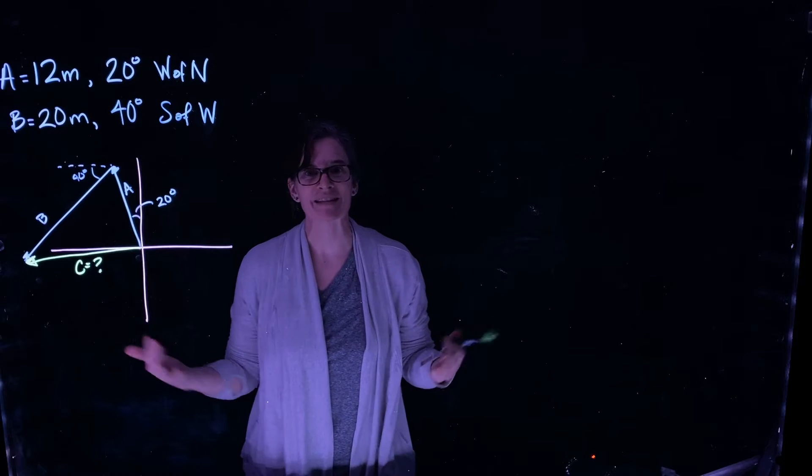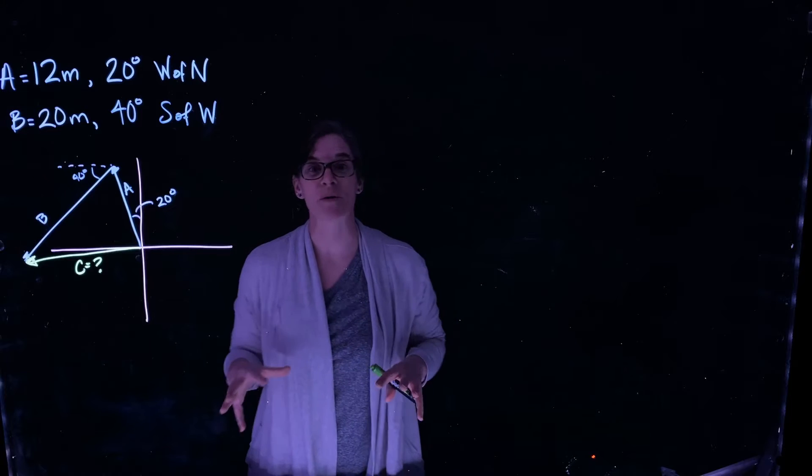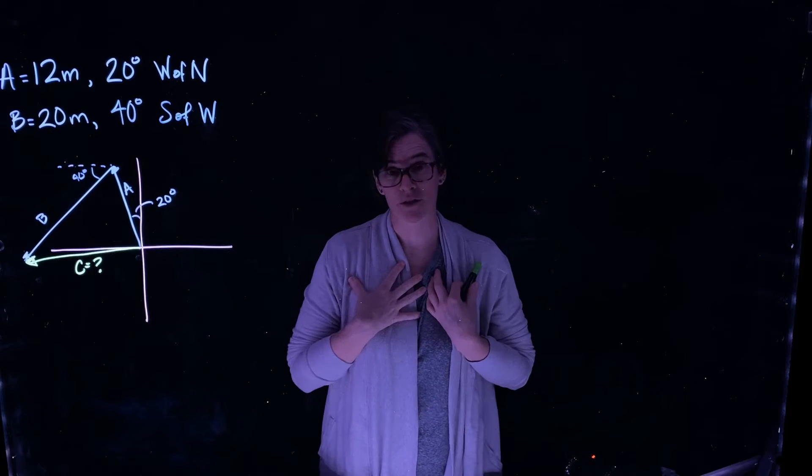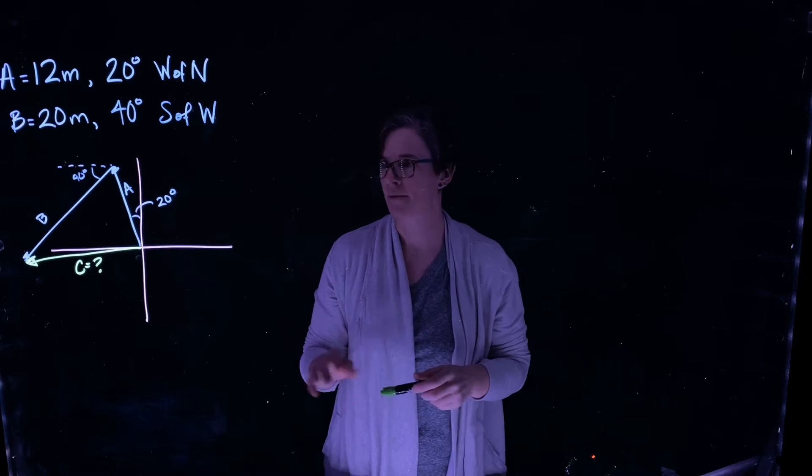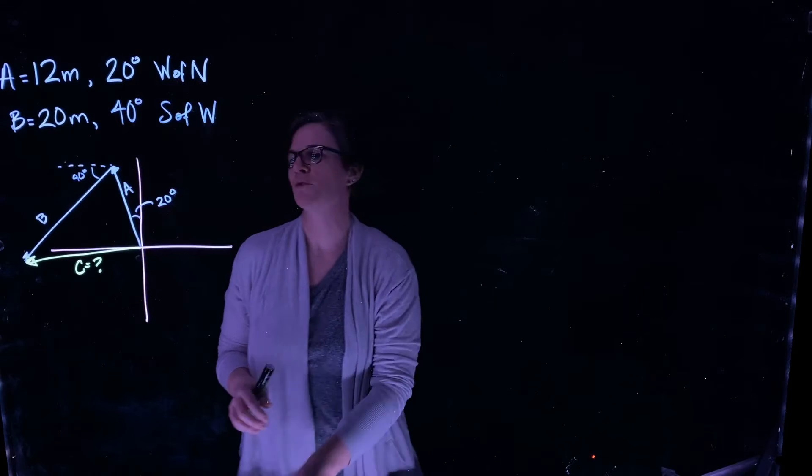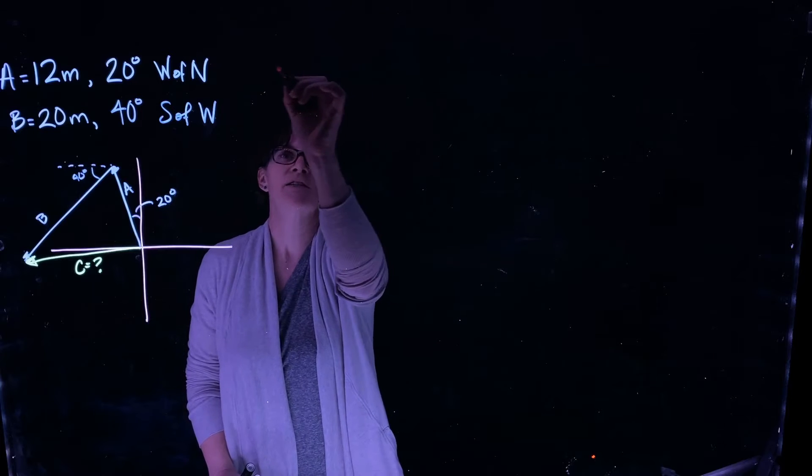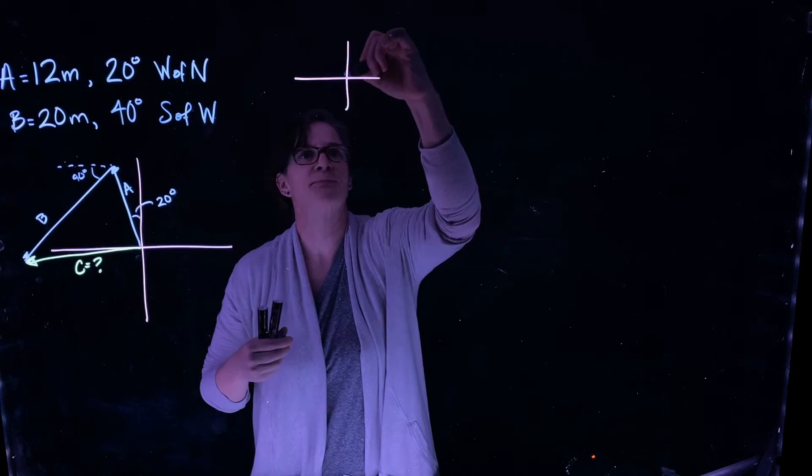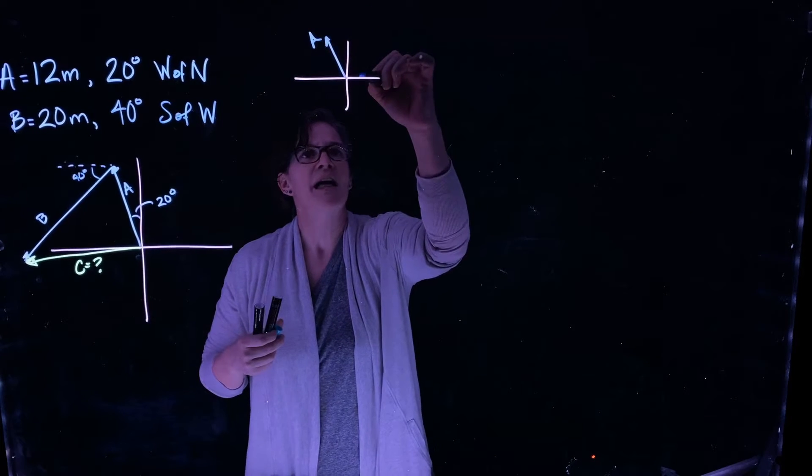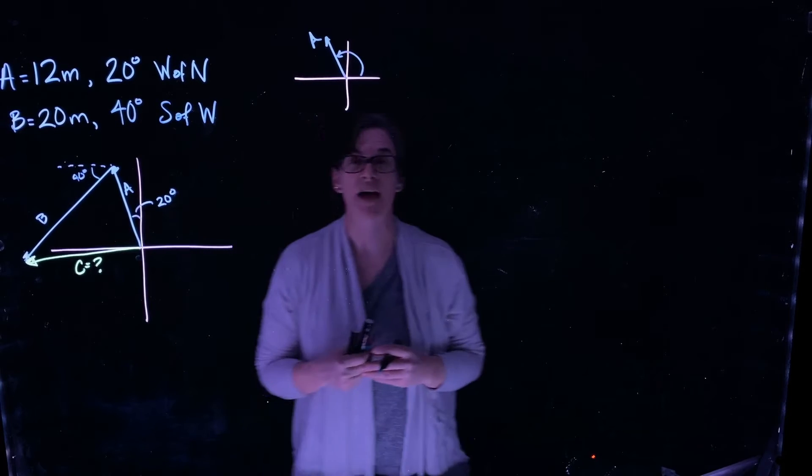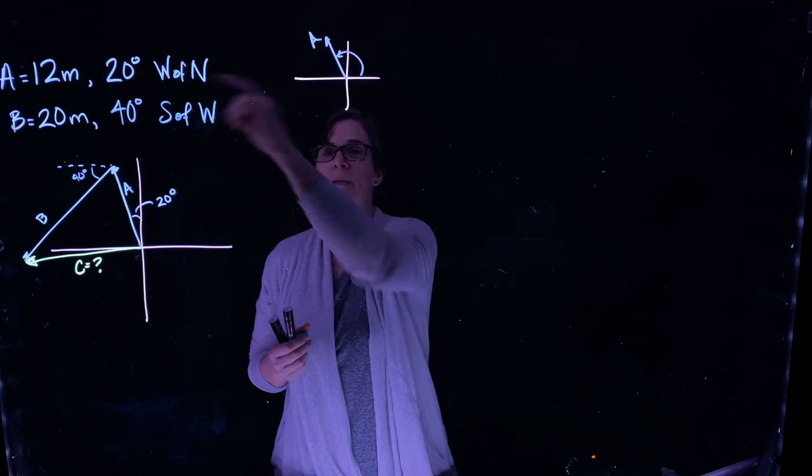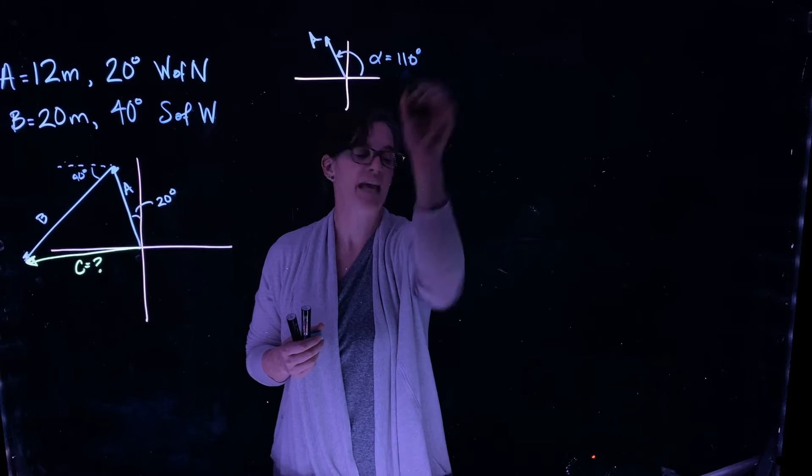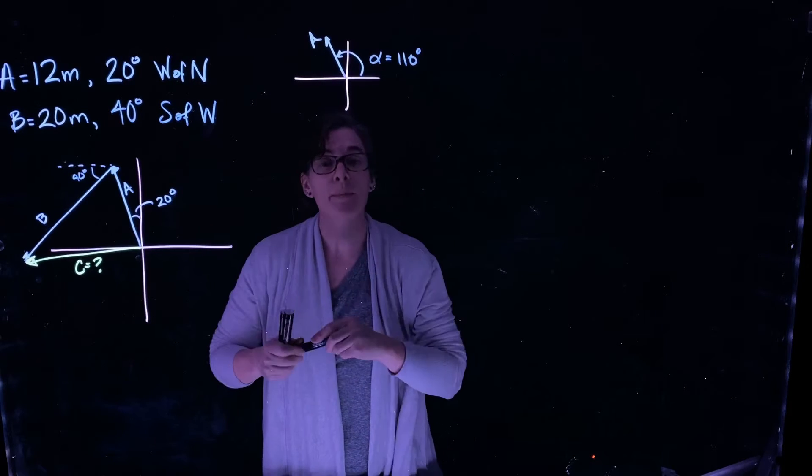So how do I determine this numerically? We're going to do it using our component form. The first thing that's going to help us understand is I like to do things relative to the positive x-axis. So 20 degrees west of north, if I were just going to represent that vector, 20 degrees west of north as shown in the picture is right here. This is the angle relative to positive x. That angle is my 90 degrees plus my additional 20 degrees. So this is an angle equal to 110 degrees for vector A.